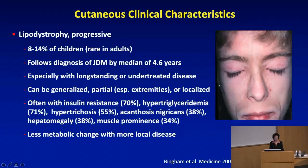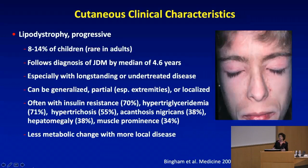Acanthosis nigricans is a sign of insulin resistance — the velvety, hyperpigmented skin we see particularly on the back of the neck, but also under the arms, groin, and sometimes on the tops of the hands. Hypertrichosis, hepatomegaly, and muscle prominence are also features that can be seen in association. There is less metabolic change with more localized disease.